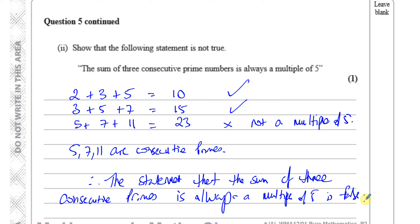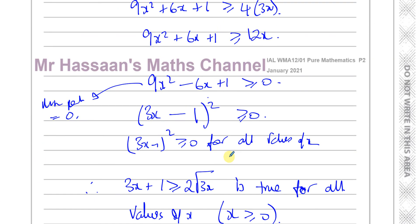That's called proof by counter-example. You try different values of what's stated — here, the sum of three consecutive prime numbers always being a multiple of five — until you find one example that does not fulfill the statement. Finding just one such example proves the statement is false. Here we had proof by deduction for part one, and proof by counter-example for part two.